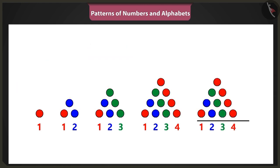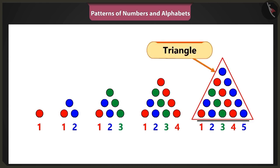Therefore, at this fifth position, after four, we will write five. And we will place five blue dots after four red dots in such a manner that they make a triangle.